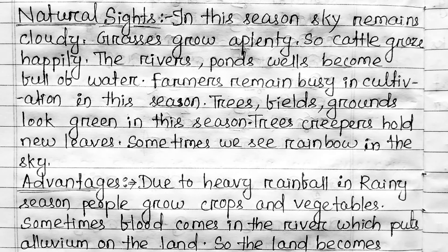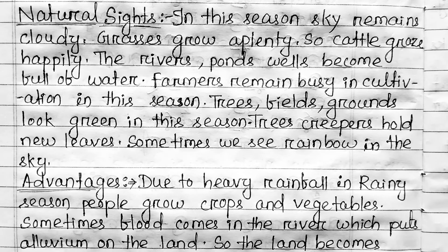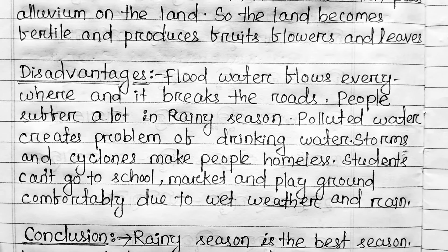Advantages. Due to heavy rainfall in rainy season, people grow crops and vegetables. Sometimes flood comes in the river which puts alluvium on the land. So the land becomes fertile and produces fruits, flowers, and leaves.